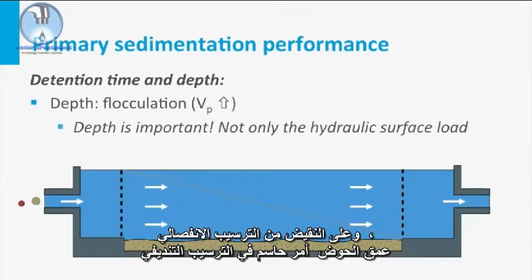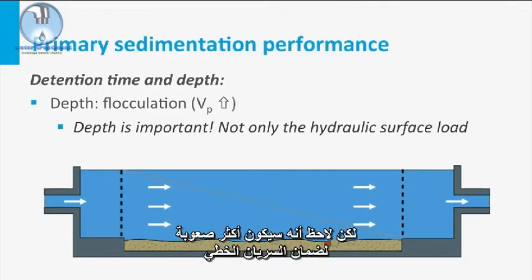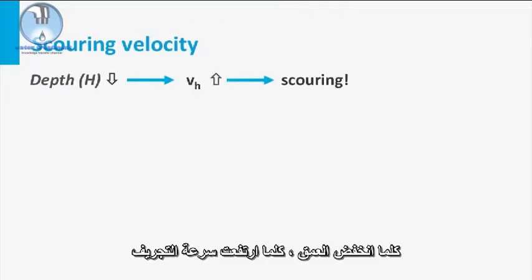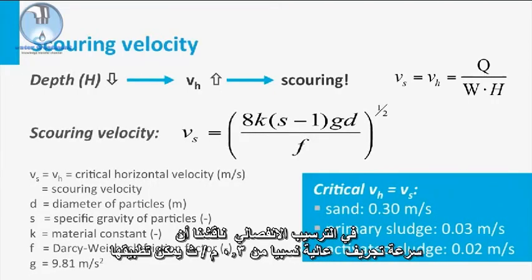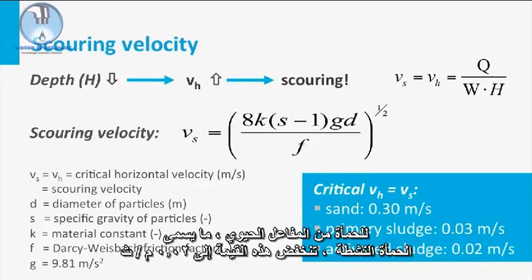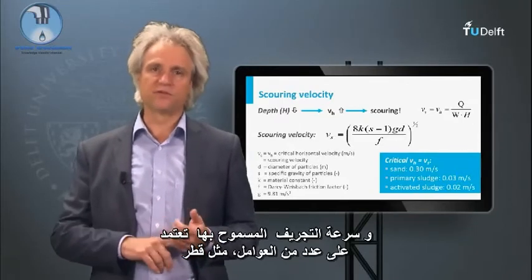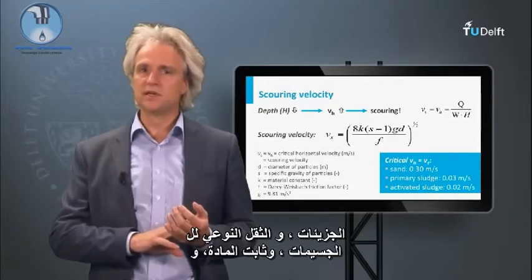In contrast to discrete settling, the tank depth is crucial in flocculent settling. A higher depth enlarges the chances for flocculation as illustrated in the slide, but note that it will be more difficult to guarantee laminar flows in deeper tanks. The depth of a tank is determined by the allowable scour velocity or the maximum allowable horizontal velocity. The lower the depth, the higher the scour velocity. In discrete settling, a relatively high scour velocity of 0.3 m/s is applicable to separate sand from organic solids. For primary sludge itself, the maximum scour velocity is about a factor 10 lower, so 0.03 m/s. For sludge from the bioreactor, the so-called activated sludge, this value drops to 0.02 m/s. The allowable scour velocity is dependent on factors such as the diameter of the particles, specific gravity of the particles, material constant, and the Darcy-Weisbach friction factor.